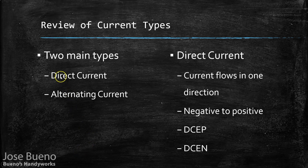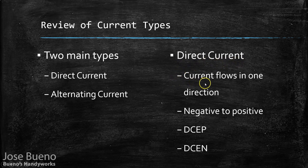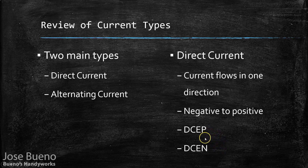There are two main types of current: direct current and alternating current. With direct current, electricity flows in only one direction — from negative to positive. There are two types: direct current electrode positive (DCEP) and direct current electrode negative (DCEN).